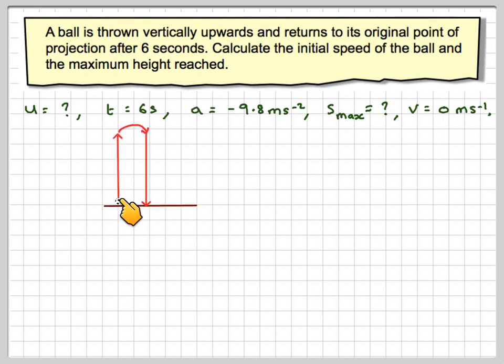So drawing a little diagram, the ball goes up, we'll get to V equals 0 and come back down again. So we've got U, we don't know, we've got to calculate.